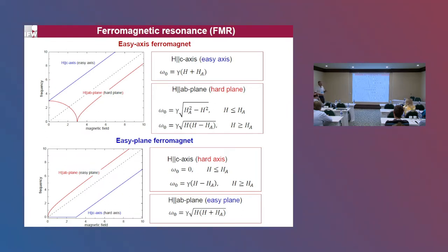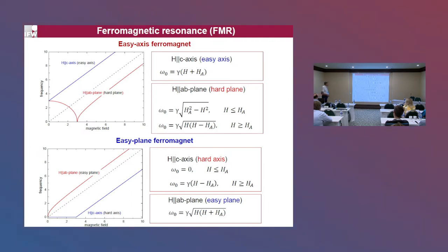For an easy-plane ferromagnet, where the spins prefer to lie in the plane, the two modes are gapless at zero field, and both develop a Zeeman gap with increasing field applied in either direction. This is a very clear-cut distinction between the easy-axis and easy-plane ferromagnet.